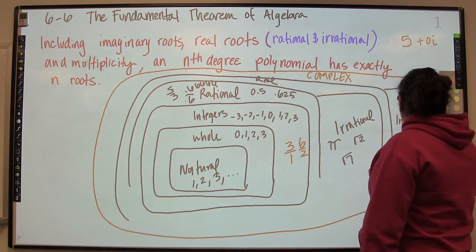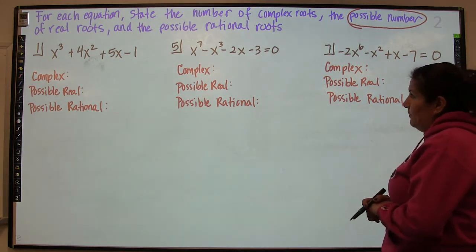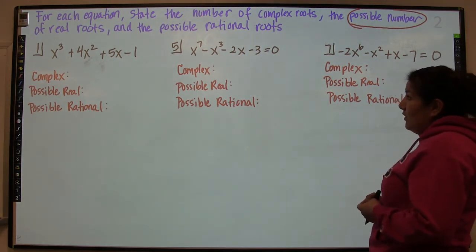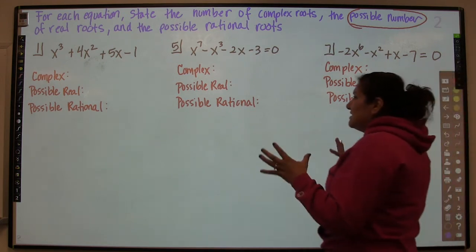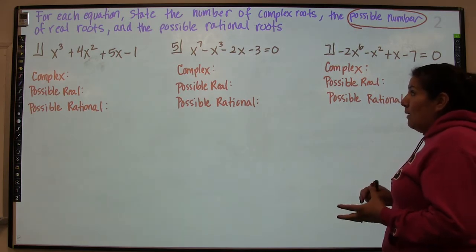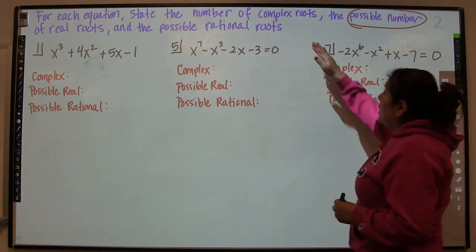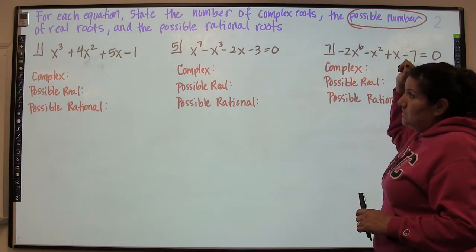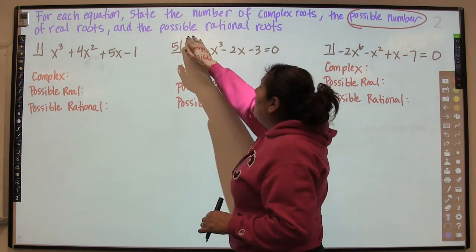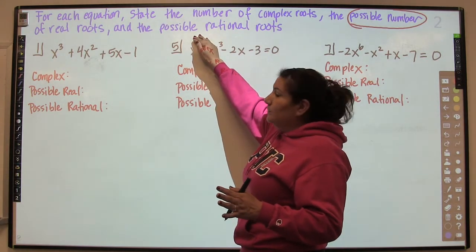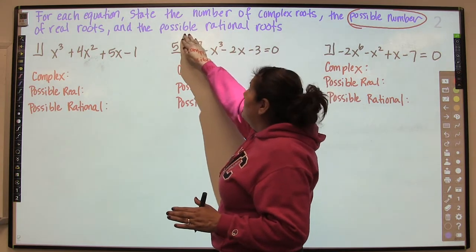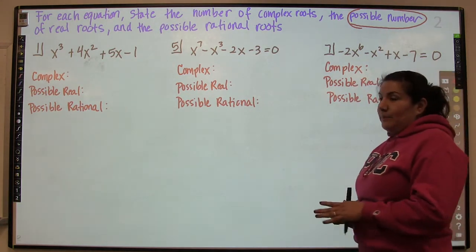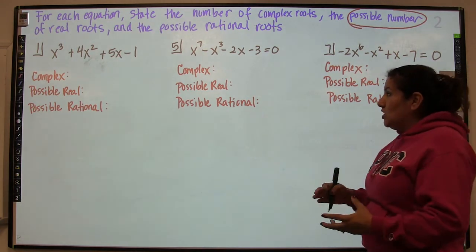For each equation, it says: state the number of complex roots, the possible number of real roots, and the possible rational roots. Although this is actually pretty easy, a lot of students get caught up with the words. Complex roots is everything under the sun — everything is complex. Then it says possible number of real roots. And the possible rational roots — that's basically the last lesson, the p over q. The possible rational roots often gets confused with the possible number of real roots, so I'm going to go through these examples.